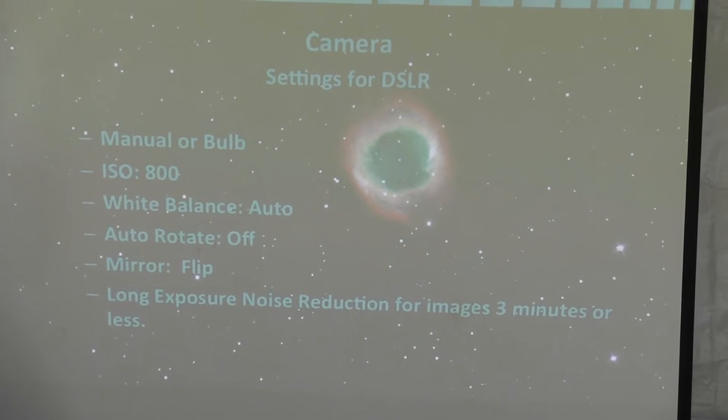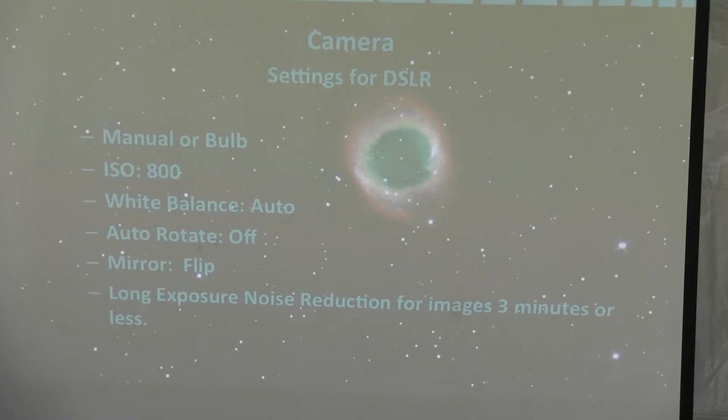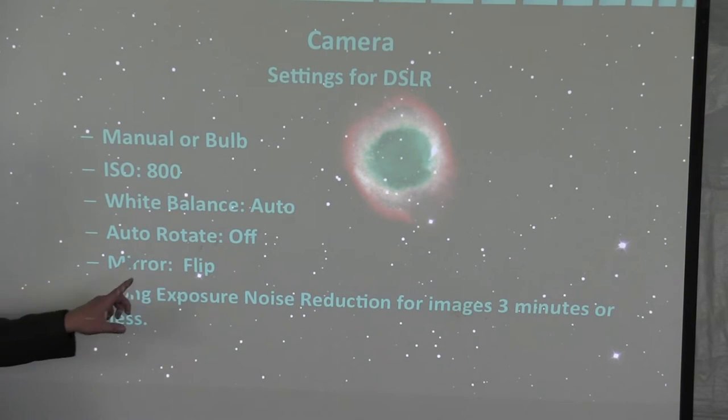Long exposure noise reduction for images three minutes or less. Most DSLRs have a function from Nikon to Canon. If you're going to image something for three minutes or more, you want to turn it off. After you take an image to remove the noise, you've got to take something called a dark frame. If you take a picture for four minutes, then the camera has to take another picture with the shutter closed for four minutes. So one picture just took you eight minutes.